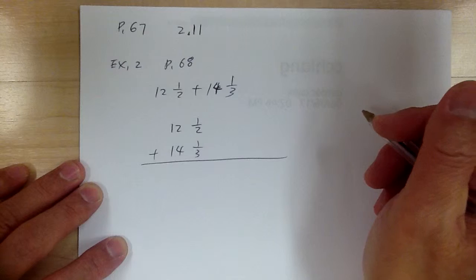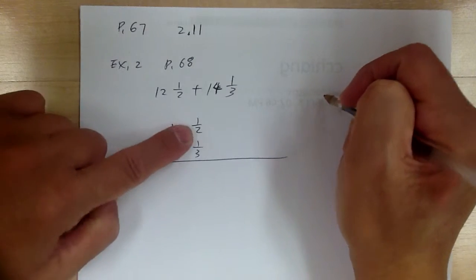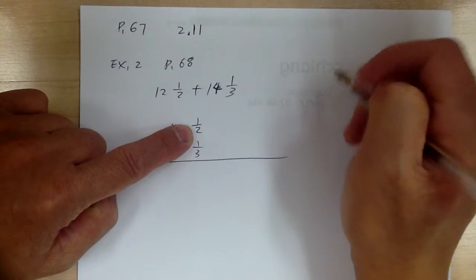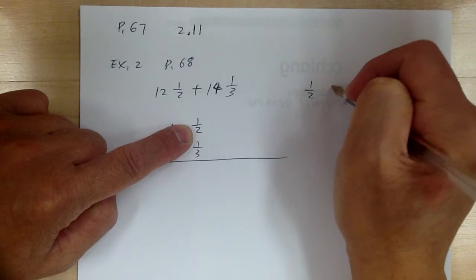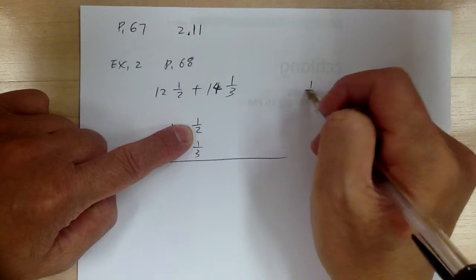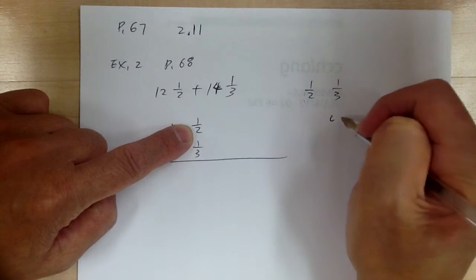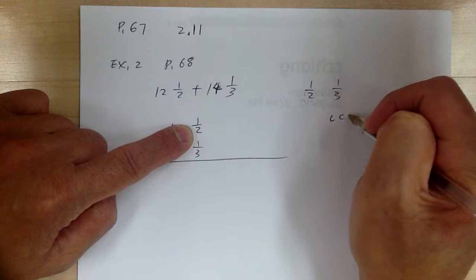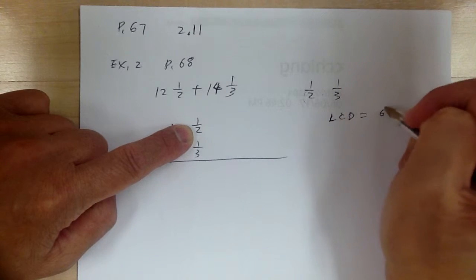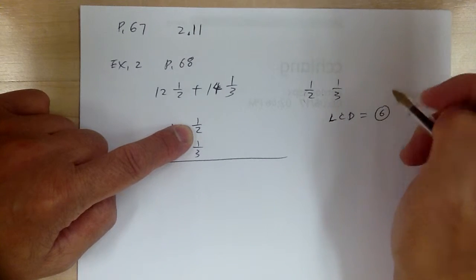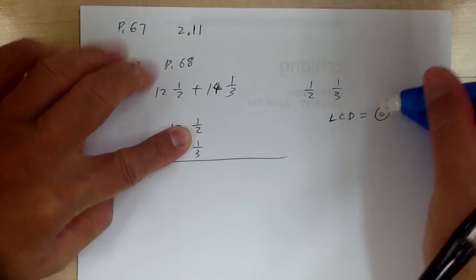You can go to the side if you want to. So the LCD — think about 1 half and 1 third, so that's your denominator. Your LCD is going to be equal to 6.